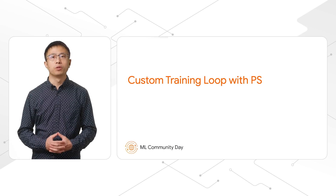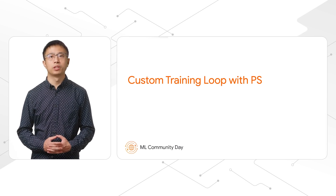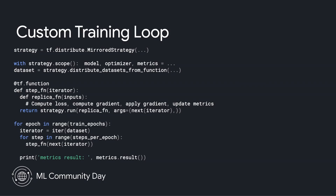Let's see how we can use Parameter Server Strategy with a custom training loop. This is a custom training loop with Mirror Strategy. We create a model and optimizer on the strategy scope, create a dataset, a training step wrapped into a tf.function, and the training loop.